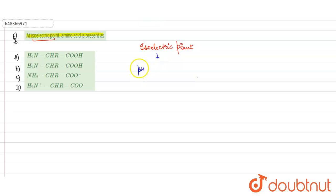...at which amino acid stops to migrate or does not migrate in an electric field. It is a pH at which amino acid doesn't migrate in electric field.